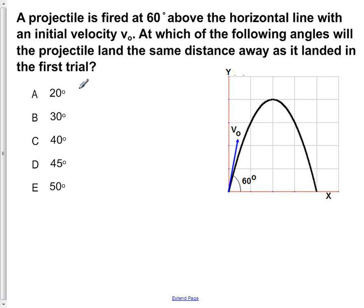We remember that the horizontal range of a projectile is given by the equation x equals v-naught squared sine of 2 theta all over g.